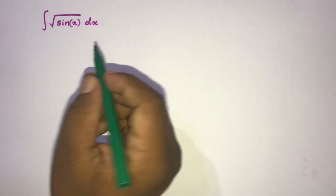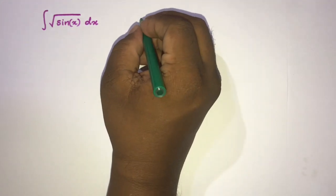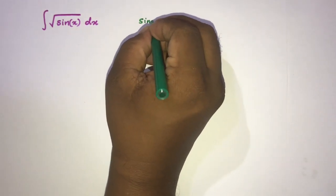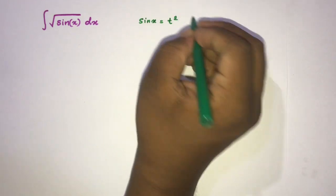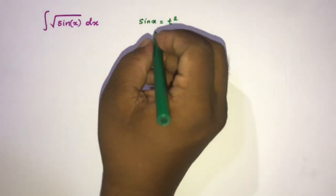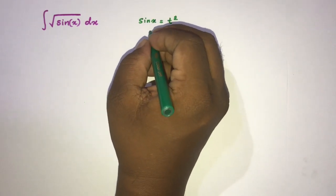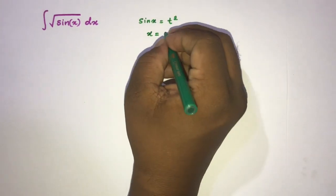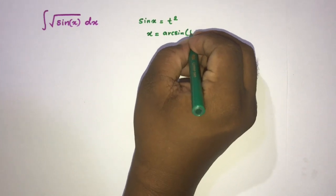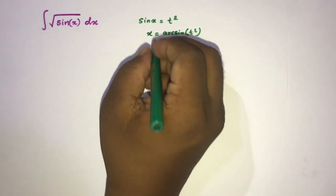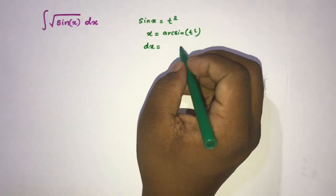First of all, I am going to take a substitution. If we let sine of x equal to t squared, before differentiating I am going to isolate x. So we know x is equal to arc sine of t squared, then we differentiate, so dx is equal to — we use the derivative of the arc sine function — 1 over square root of 1 minus the square of the angle.